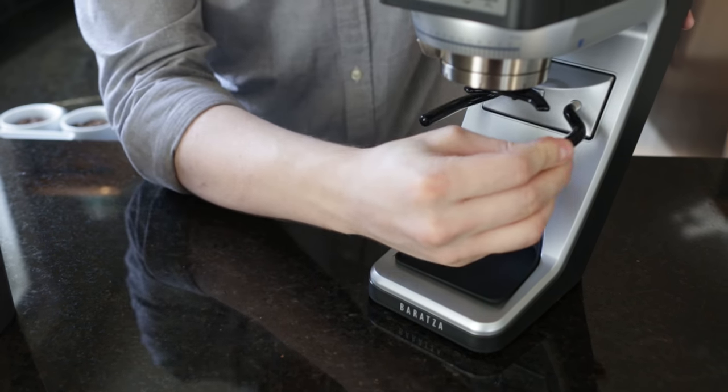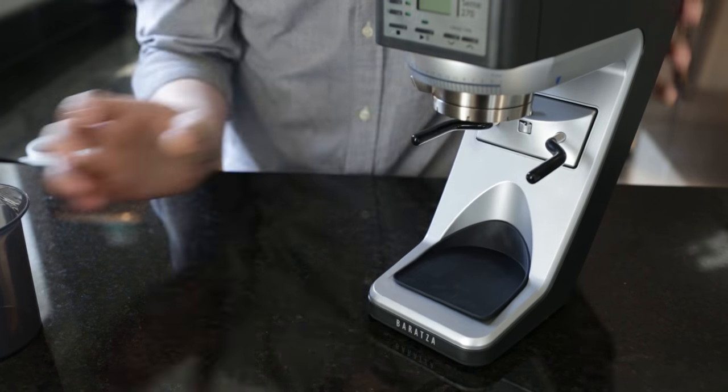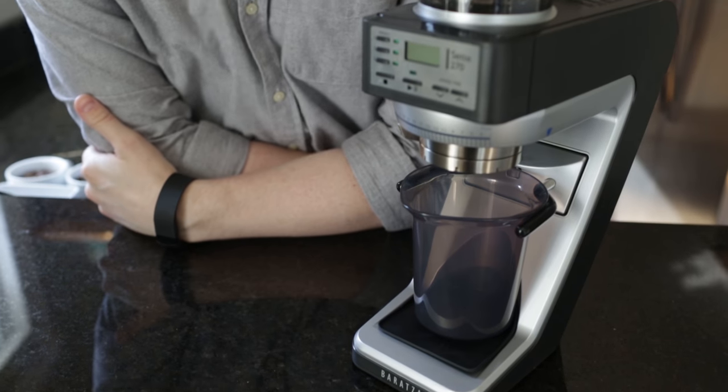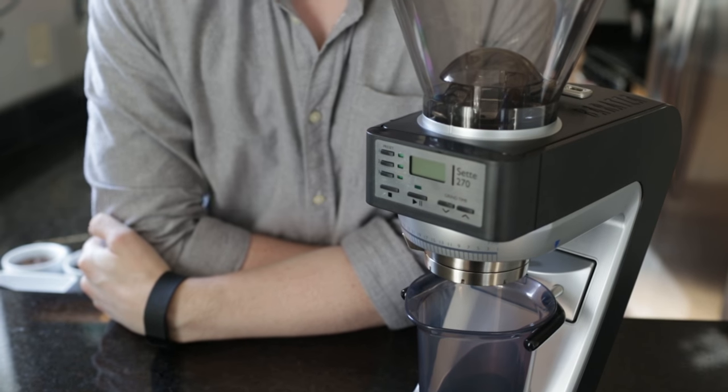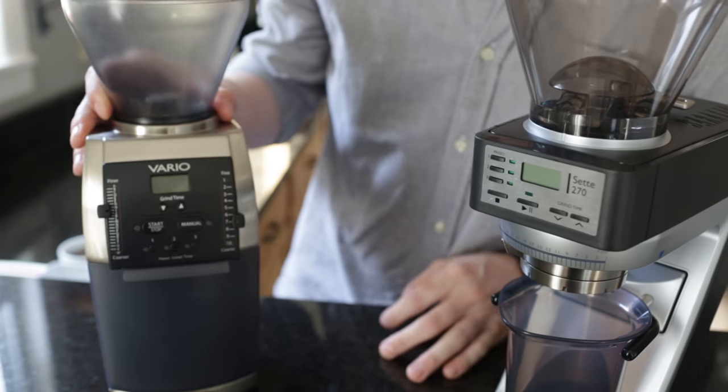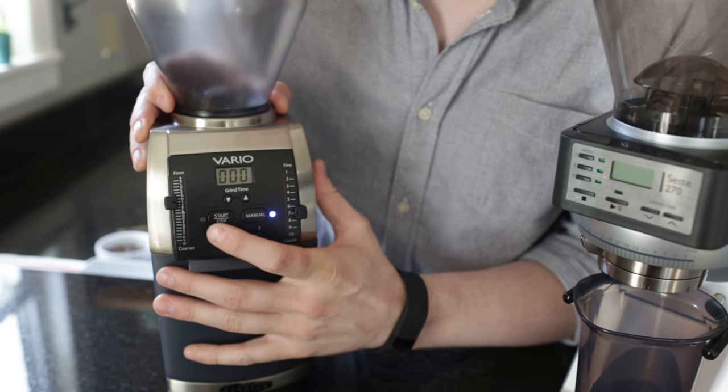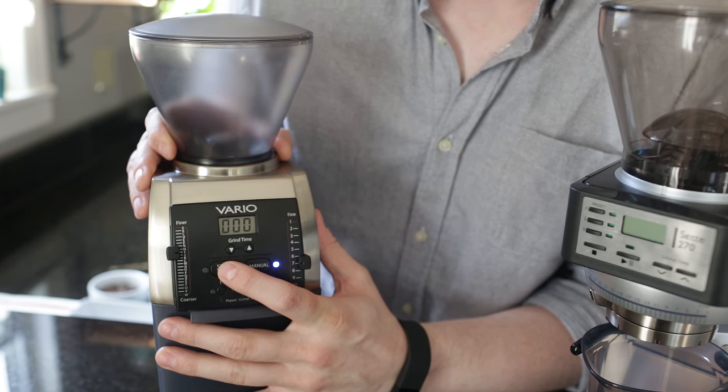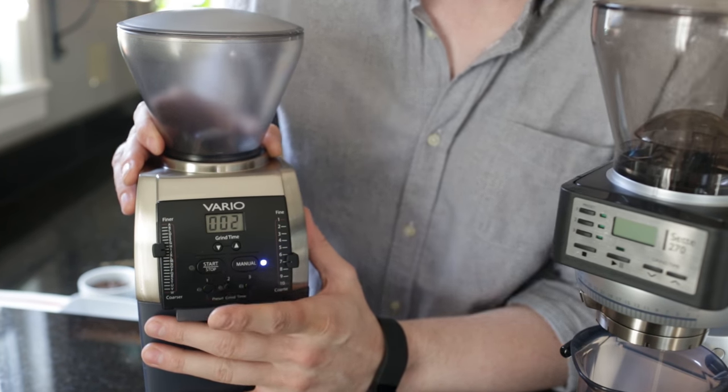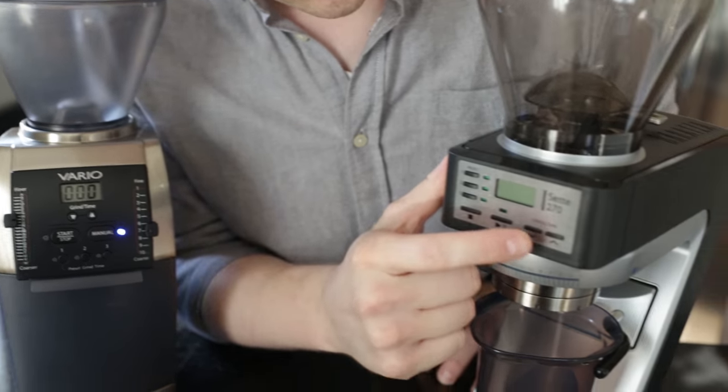Now, let's talk about grind speed and noise. We have found that the Sette is a decent bit louder than the previous grinders. In fact, I've got a Vario here. You can notice the noise difference right away if I turn this on. So here's the Vario grinding. Not too loud. And here's the Sette.